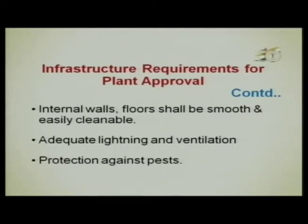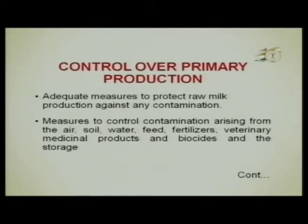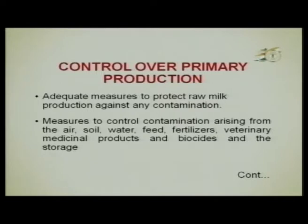Protection against pests must be ensured in each area of operations. Control over primary production is a major aspect — there must be adequate measures to protect raw milk production against contamination arising from air, soil, water, feed, fertilizer, veterinary and medicinal products, biocides, and improper storage.